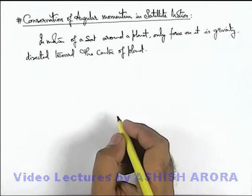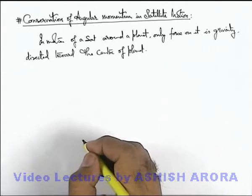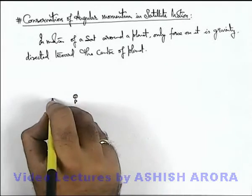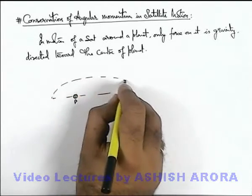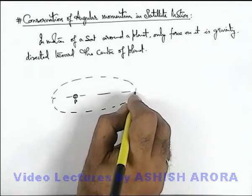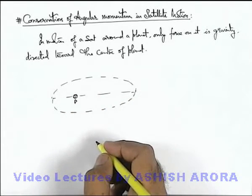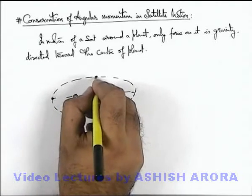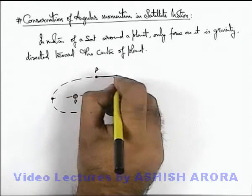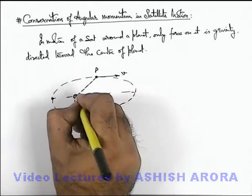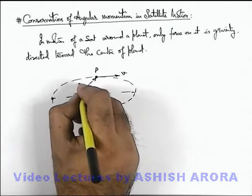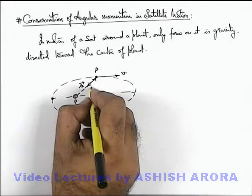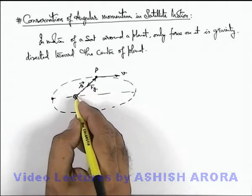We can draw the situation: if a satellite is in elliptical motion, say this is the planet and the satellite is revolving around the planet in an elliptical orbit. When the satellite is at a position P, moving with a tangential speed v, and its position vector is r with respect to the planet, the only force acting on it will be the gravitational force directed towards the centre of the planet.